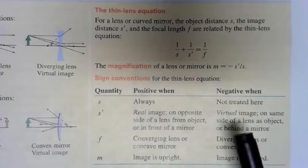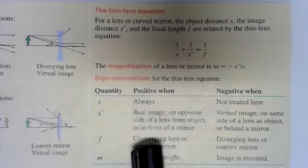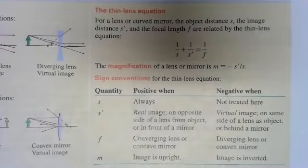If you get a negative image distance, know that it's going to be on the same side of the lens and will be virtual.